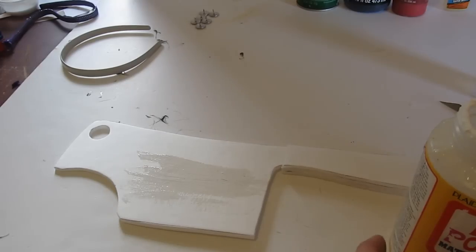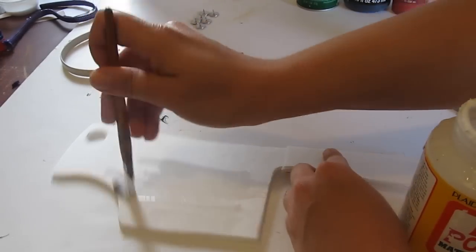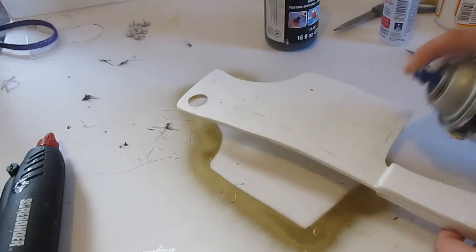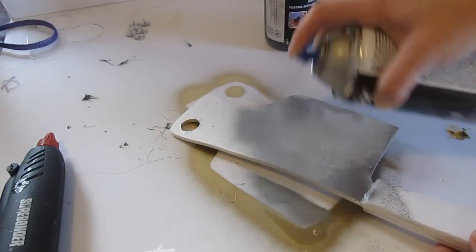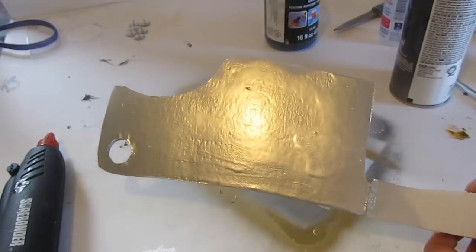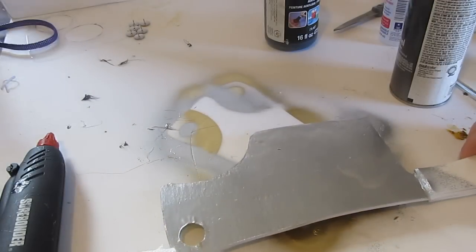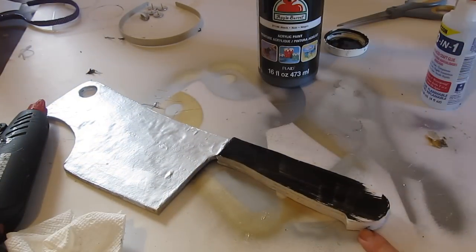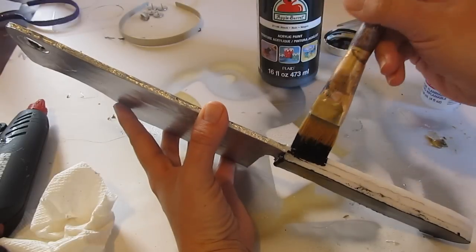And then if you can, this is optional, but coat it with something. We're using Mod Podge, works really well for this. Makes it a little, strengthens it and makes it a little more glossier. And then paint it. Now use silver paint if you have it, spray paint or regular brush on paint. If you don't have silver, you can go with a light gray and then paint the handle black.